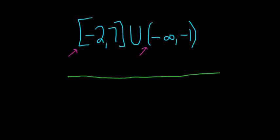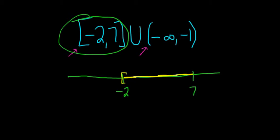And let's go ahead and graph the first set here, negative 2, 7. So maybe here's negative 2, and here is the 7. And so we want to shade everything in between these two numbers. So I guess I'll use yellow for that. And we include the negative 2 and the 7, so I'll go ahead and use brackets, just like it's indicated in this set. So that's the first set.